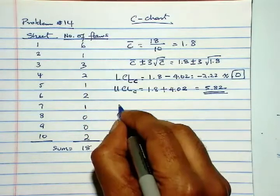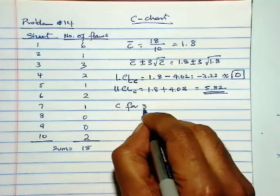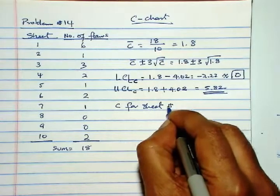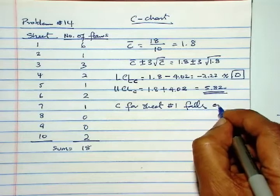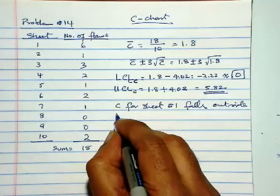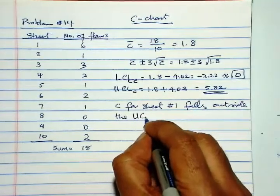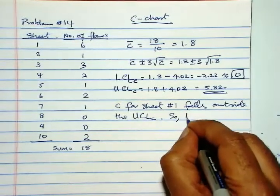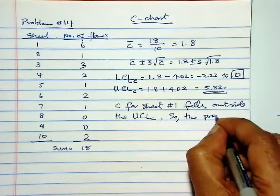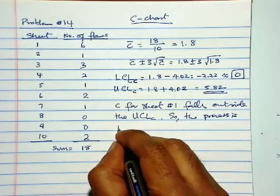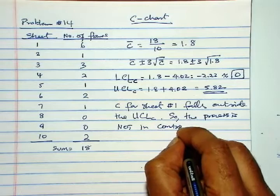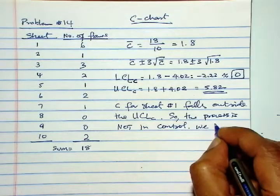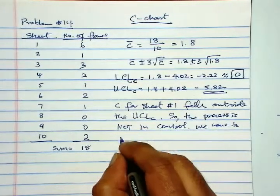c for sheet number 1 falls outside the upper control limit of c. So the process is not in control. We have to look for assignable causes.